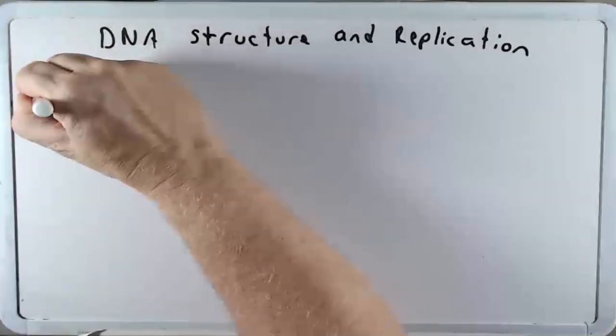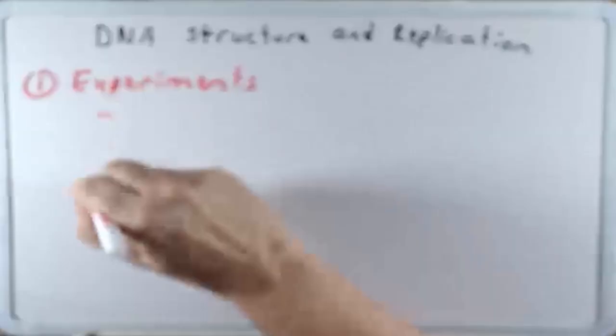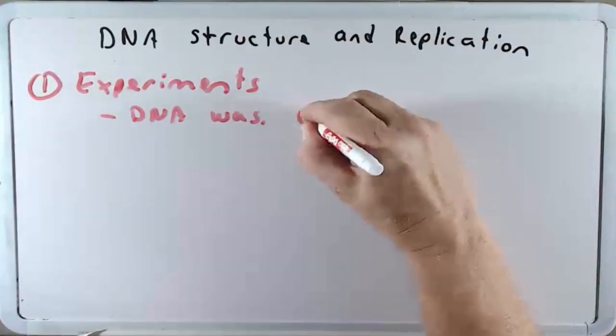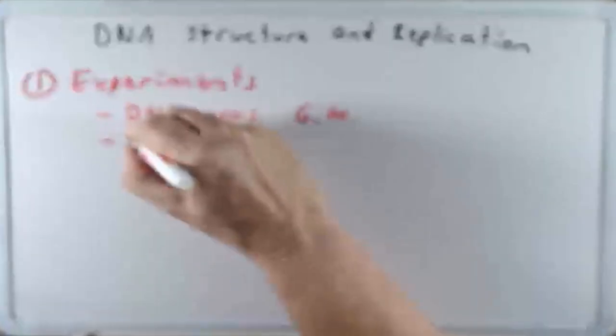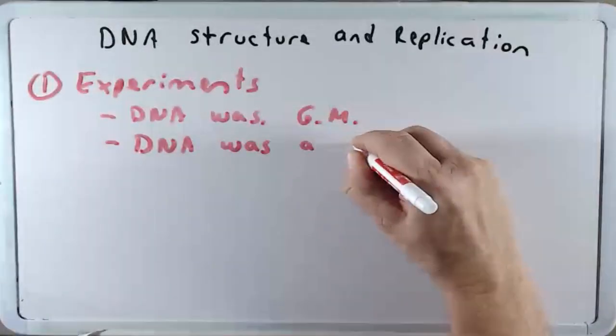Throughout this discussion we're going to focus on early experiments that showed that DNA was the genetic material. I'm just going to put GM for genetic material and that DNA was a double helix.